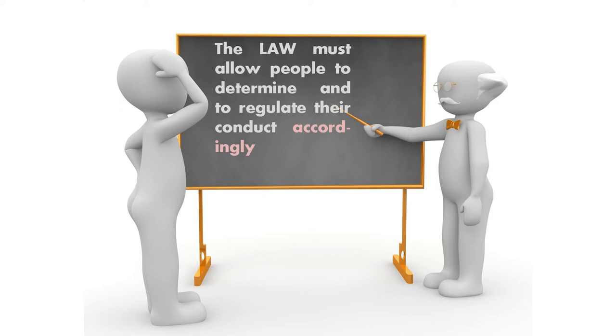Finally, the law must allow people to determine and regulate their conduct accordingly, and it must be made accessible to the public. A secret law is of very little use in regulating people's behavior — and there are some countries where laws are indeed not made public. The Human Rights Committee notes that vague laws will be abused, often giving officials discretionary power that leaves too much room for arbitrary decision-making. Vague laws have a chilling effect and inhibit discussions on matters of public concern, creating uncertainty about what is permitted and causing people to steer far clear of any controversial topic for fear it may be illegal, even when it is not.